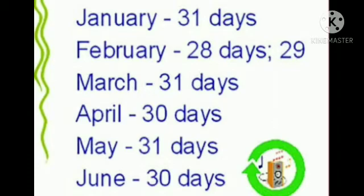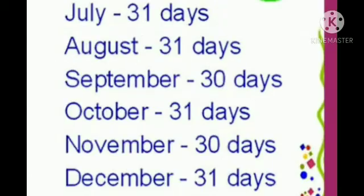June has thirty days. July has thirty-one days. August has thirty-one days. September has thirty days. October has thirty-one days. November has thirty days. December has thirty-one days.